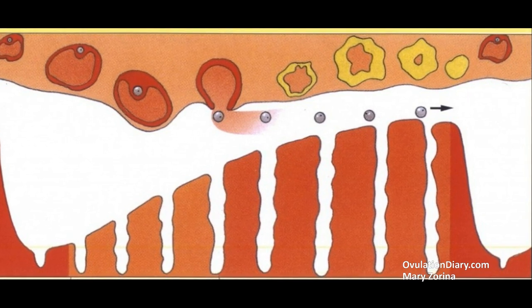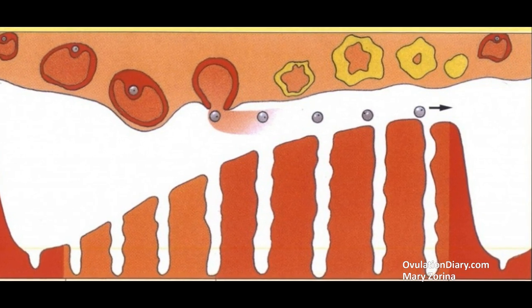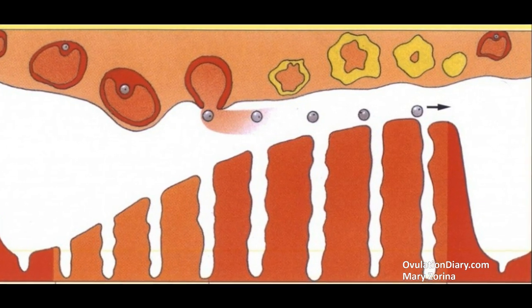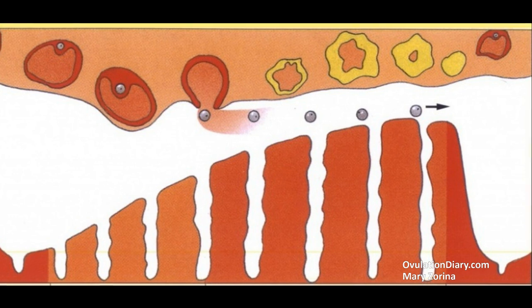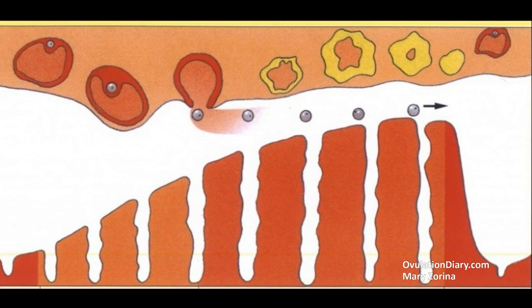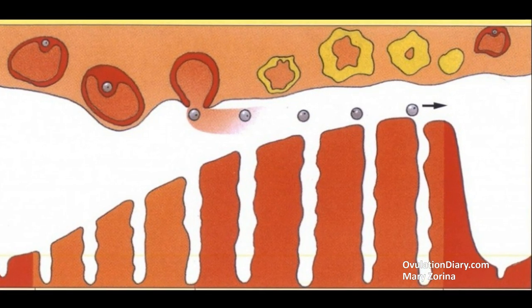Standard 28-day menstrual cycle and its stages. The normal female cycle consists of these phases.